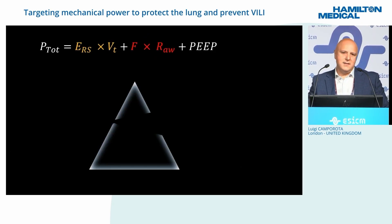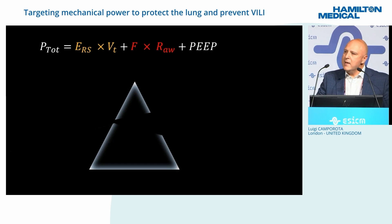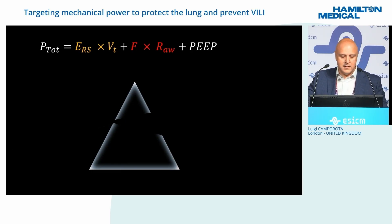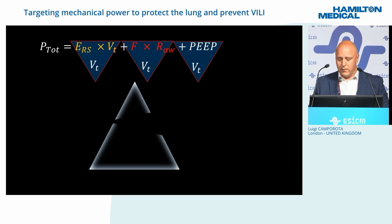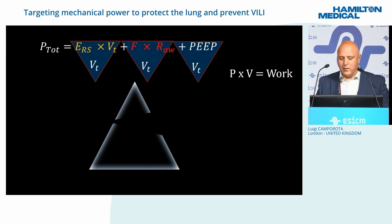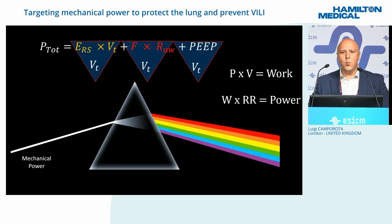If you like formulas, this is important: this is the equation of motion, which is fundamental to understanding mechanical power. In yellow you can see the elastic energy — tidal volume multiplied by elastance — then resistance, then PEEP. If you take every single component and multiply each by the tidal volume, you obtain work: pressure times volume equals work. And if you take the work and multiply by the respiratory rate, you obtain power.